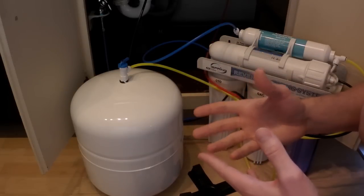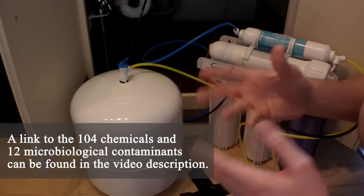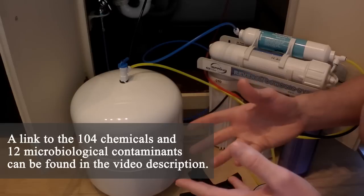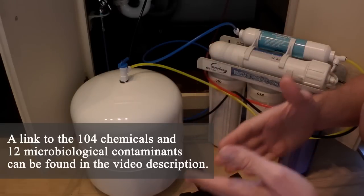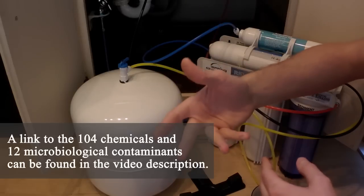The Environmental Protection Agency actually released what's called a CCL. It stands for Contaminant Candidate List, and it's a list of 116 substances found in drinking water. I'll include the list down below. I'll just go over a couple of them now.